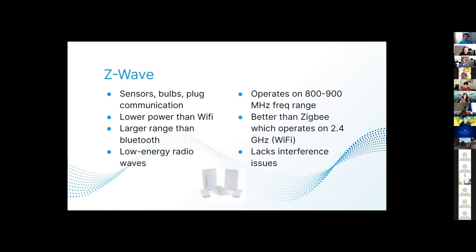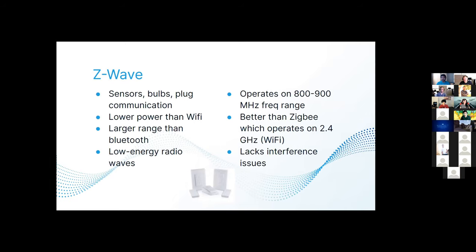This will be the Z-Wave. There's sensors, bulbs, and plug communication. Wherever you plug it in your house, it'll be able to communicate with each part of the system. It uses less power than Wi-Fi, has a larger range than Bluetooth, uses low energy radio waves and operates on 800 to 900 megahertz frequency range. One system I didn't include is called the Zigbee, which operates on 2.4 gigahertz, which is not that great because it can have interference from Wi-Fi signals. The benefit of the Z-Wave is that it lacks interference issues. My favorite thing, especially as a CPE, is the low power.